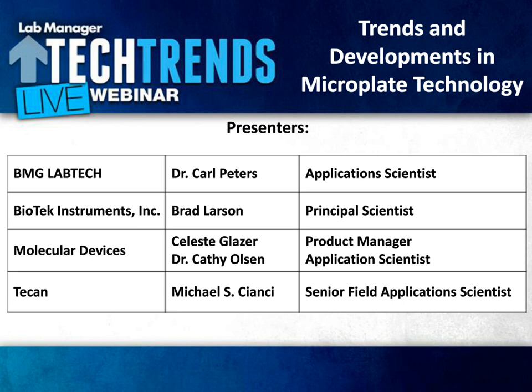Let me introduce our first speaker. Dr. Carl Peters is a microplate reader senior application scientist with BMG Lab Tech. He obtained a Ph.D. in cell and molecular biology from Northwestern University while studying protein kinase C signaling, and a B.S. in biology from Hastings College. Prior to BMG Lab Tech, he was an adjunct professor of biology at Roosevelt University and subsequently a clinical assistant professor in the School of Molecular Biosciences at Washington State University. Thank you for the introduction, Trevor, and thank you to all of you for attending.